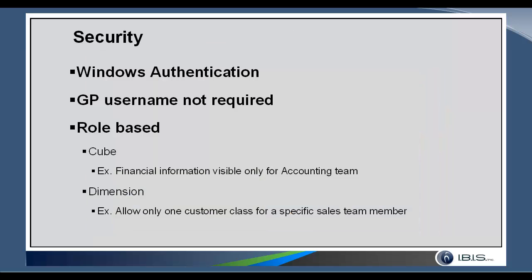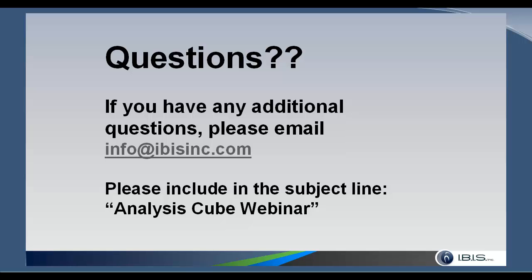The final thing I wanted to talk about is security. Analysis Cube security is all controlled through Windows Authentication, so you could have analysts or team members who aren't GP users but can still access the cubes and build reports from the data. Security is role-based — you can give users access only to certain cubes. For example, the accounts receivable department can be restricted to only the receivables cube. You can also control security down to the dimension level, allowing a specific sales rep to see only their customer information so they can generate their own reports. With that, that concludes our webinar. If you have any additional questions, please email info@ibisinc.com with the subject line 'Analysis Cube Webinar.' Thank you for attending today's webcast and have a great day.